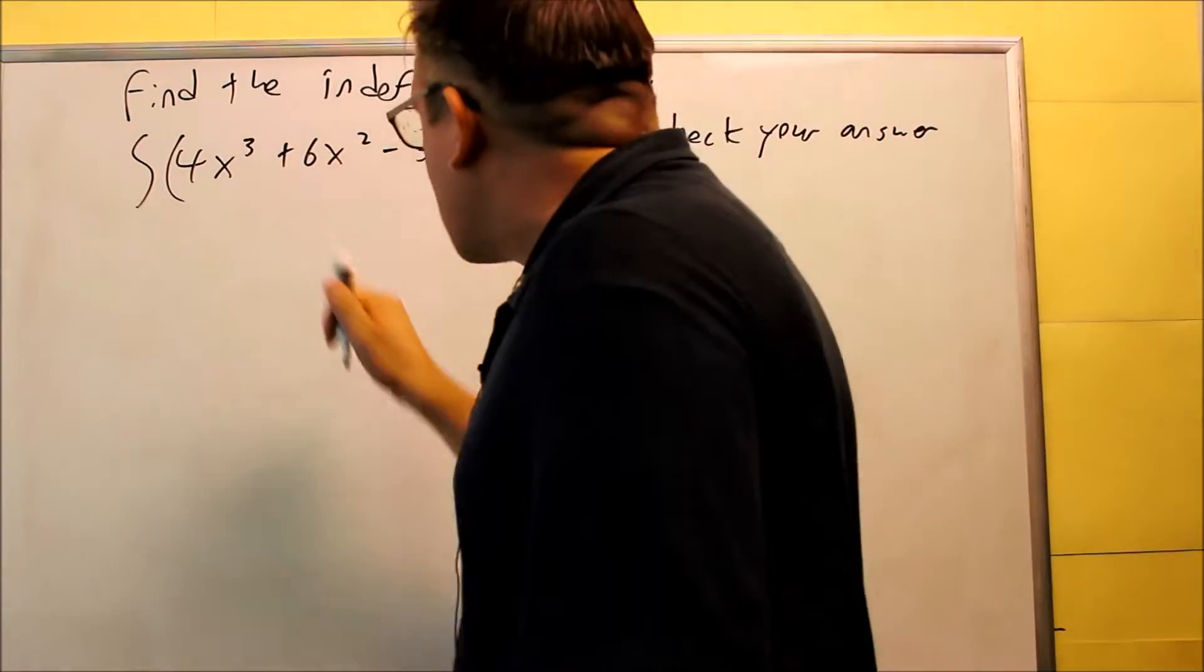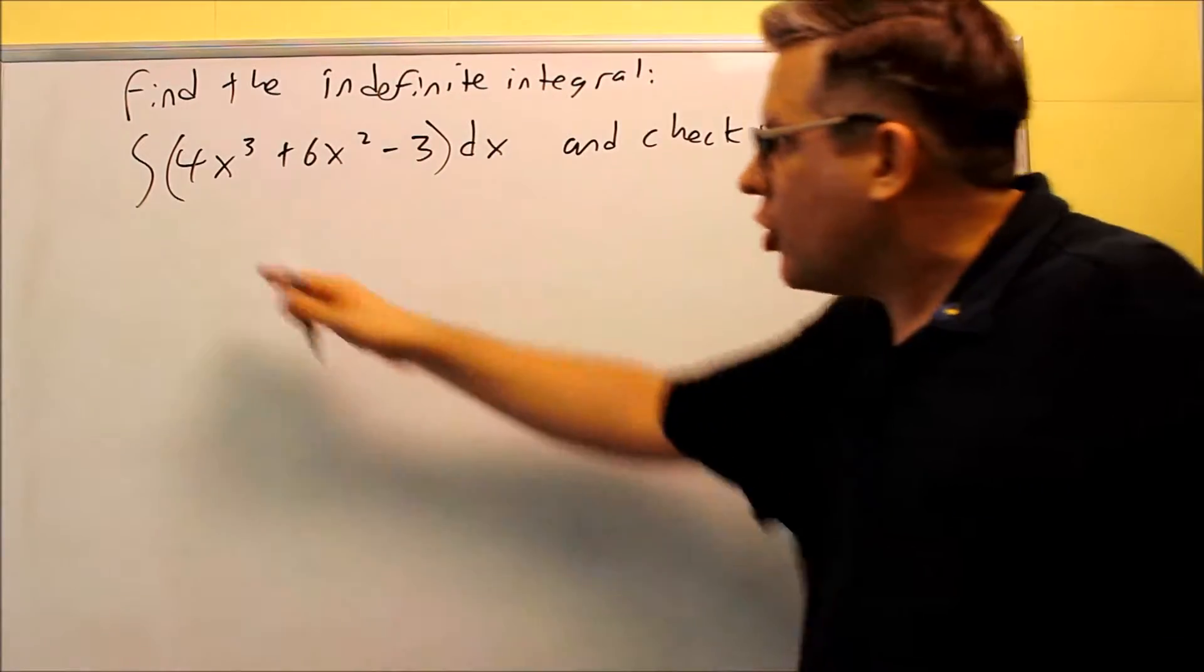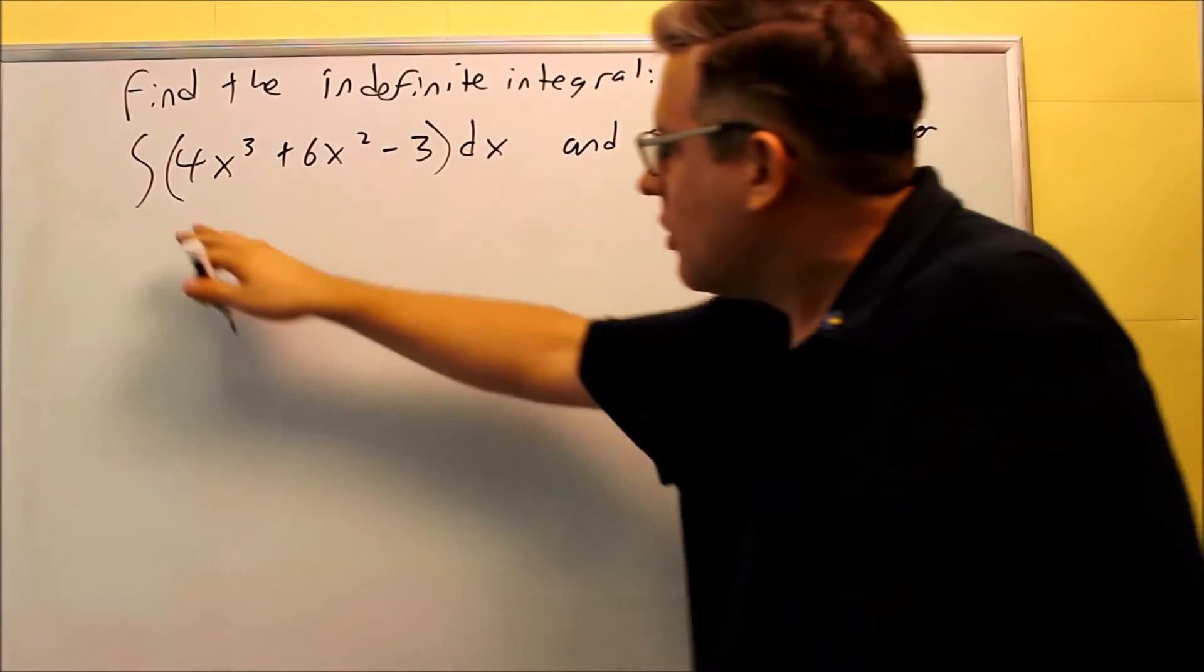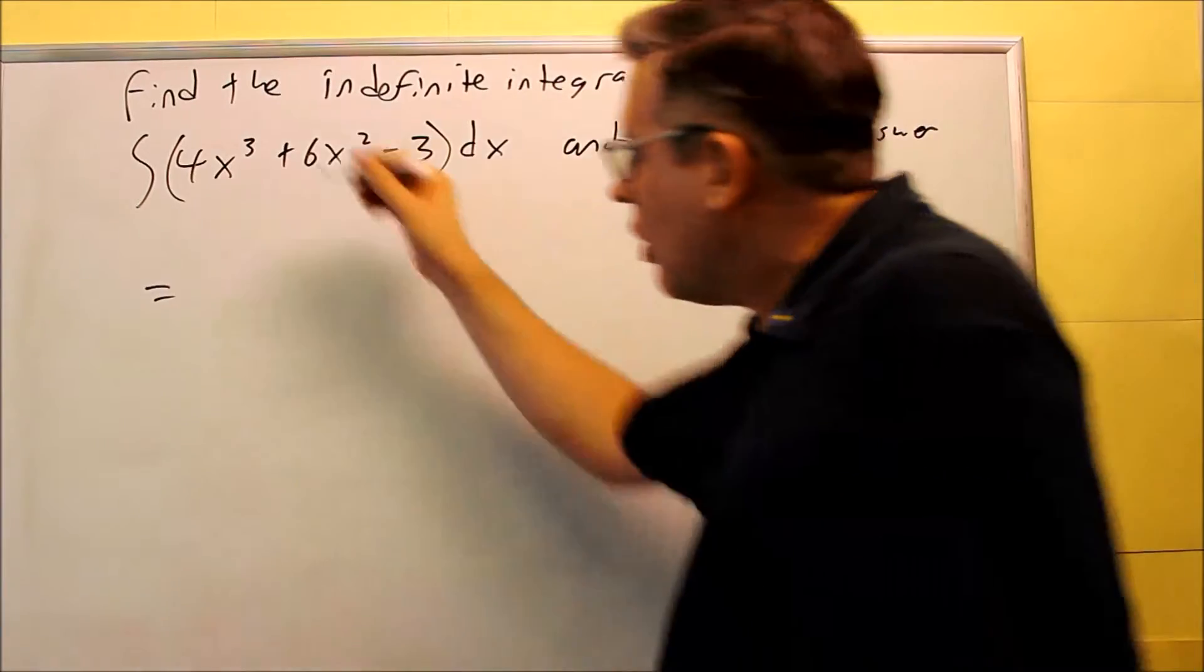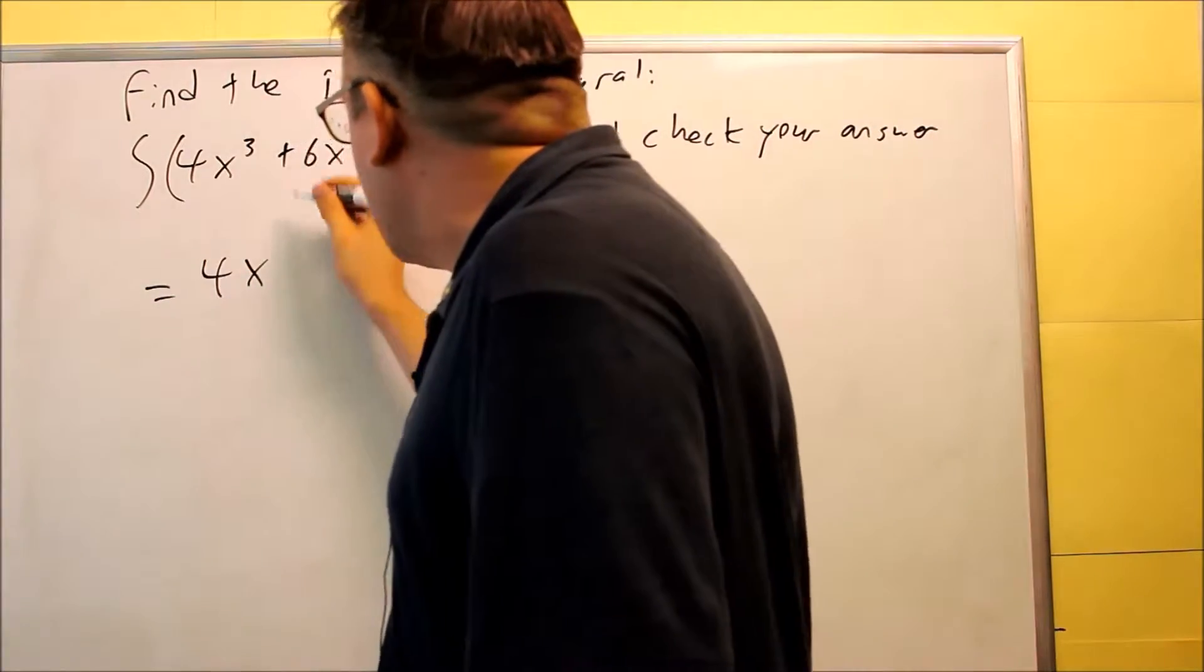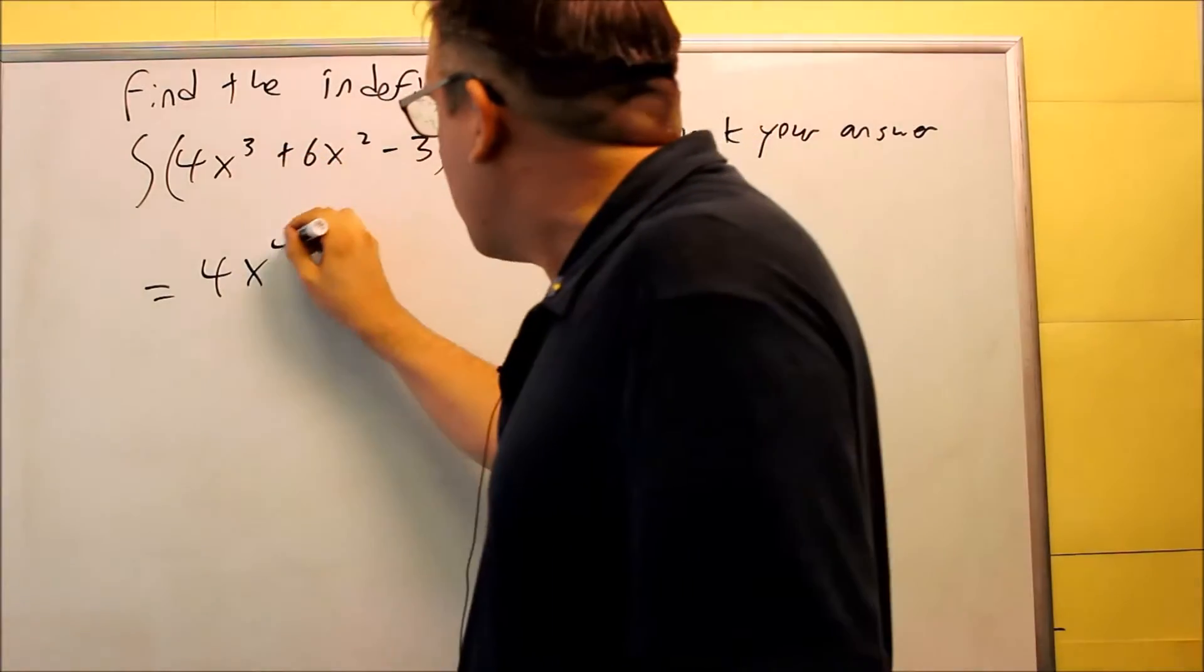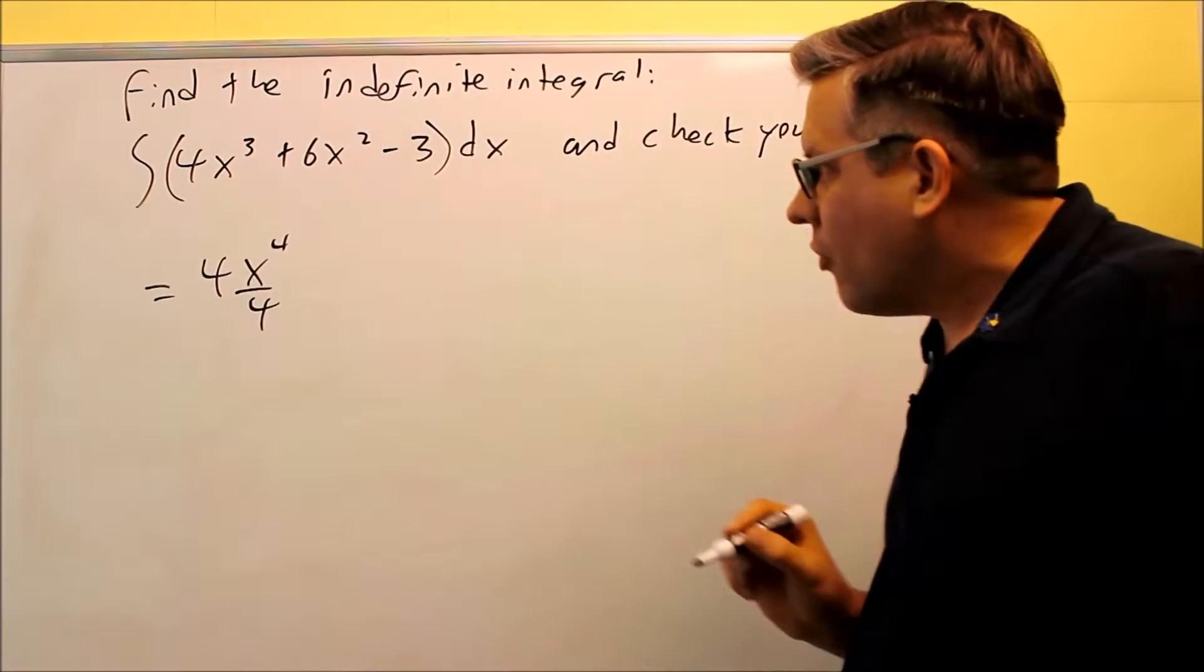We're going to use that on this one. So once you actually apply that formula, you don't need to write the integral and the dx anymore because this will end up giving you your answer. So we're going to go right into writing the formula. I have 4x. I'm going to raise the power by 1, so 3 plus 1 gives me 4. Then we're going to divide by the new power, so we're dividing by 4.